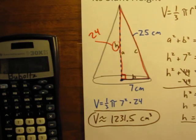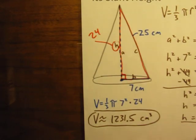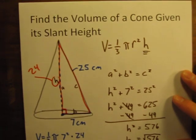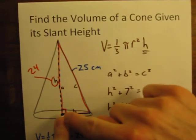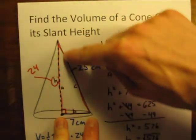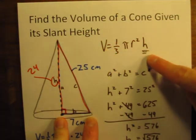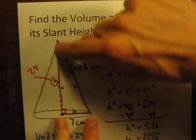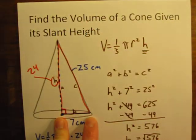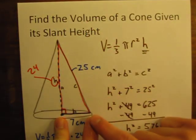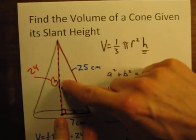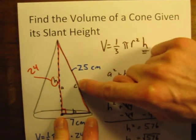So that was kind of a long problem, but let me just recap what we did. We wanted to get the volume of the cone. The problem gave us the radius of the cone and the slant height of the cone. But when we're using our volume formula, we don't want the slant height, we want the actual height of the cone. To do that, we had to use the Pythagorean theorem. A squared plus B squared equals C squared.